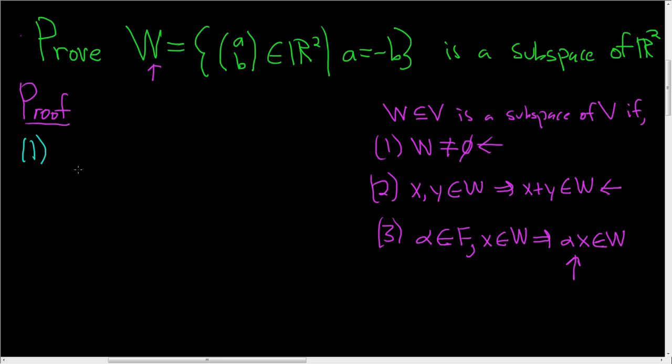So step one, we have to show it's non-empty. So we have to explain why there is a vector in W. Well, the easiest choice is zero, because note, zero is equal to minus zero. So that's this condition here with A equal to zero and B equal to zero. So this is precisely what it means for the vector zero, zero to be inside W. So this shows that W is not the empty set. So it's a non-empty subset. So condition one is satisfied, and we're done with that part of the proof.